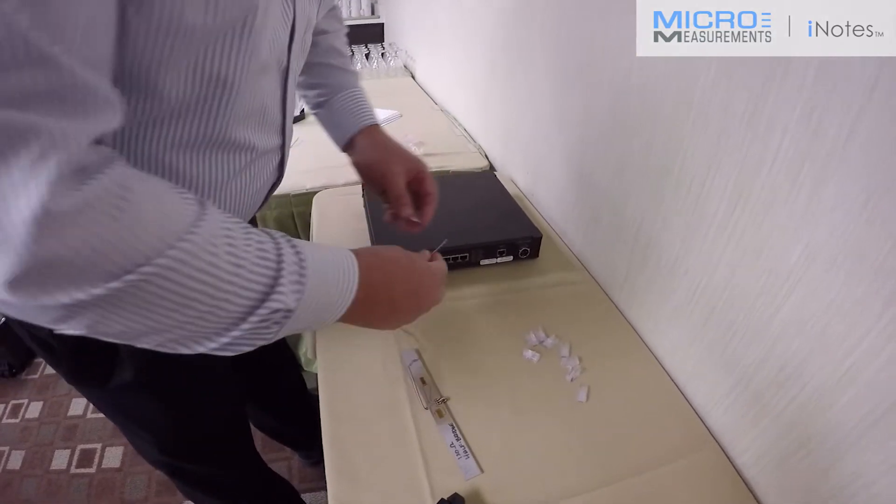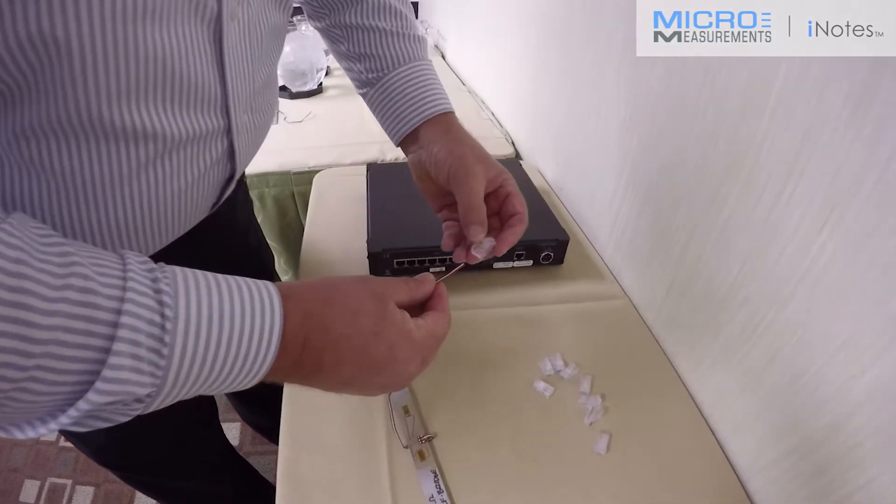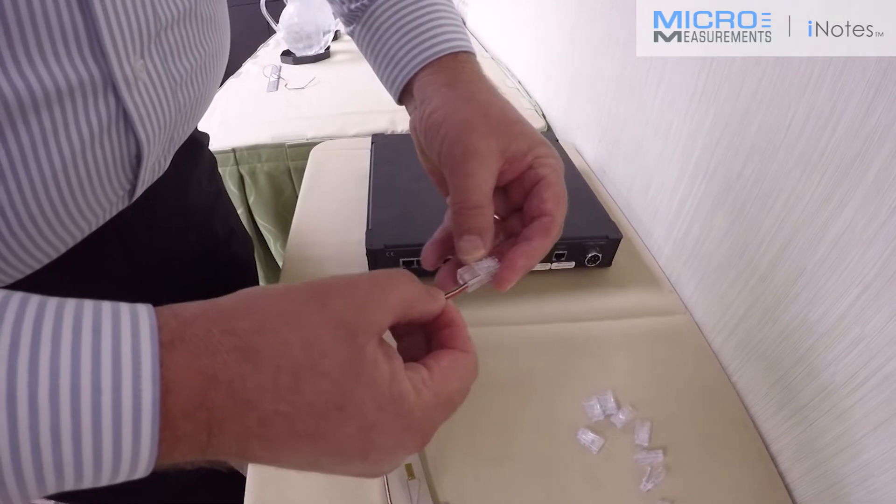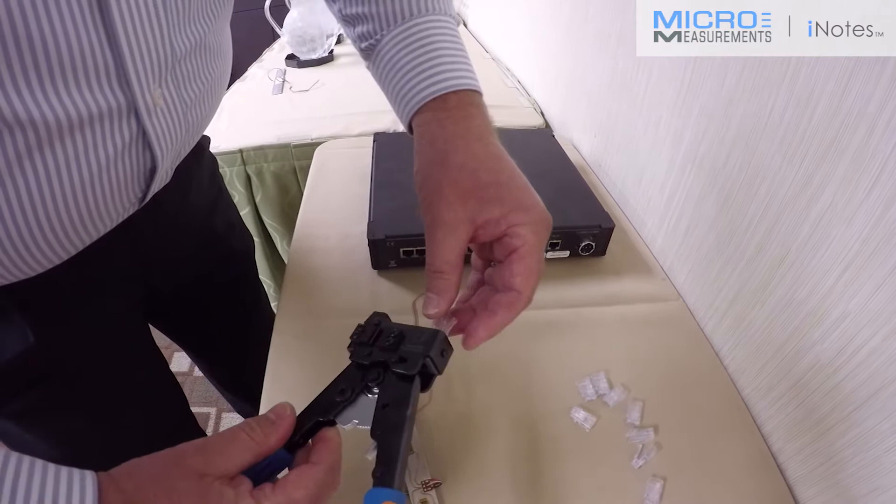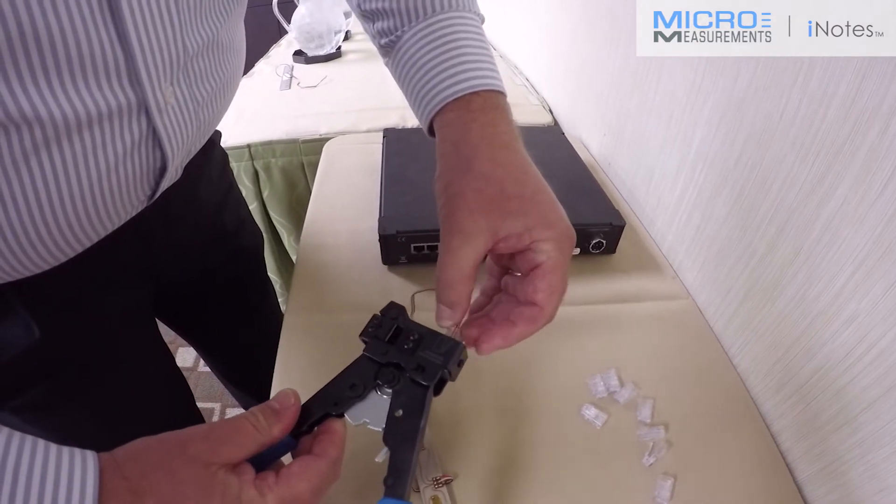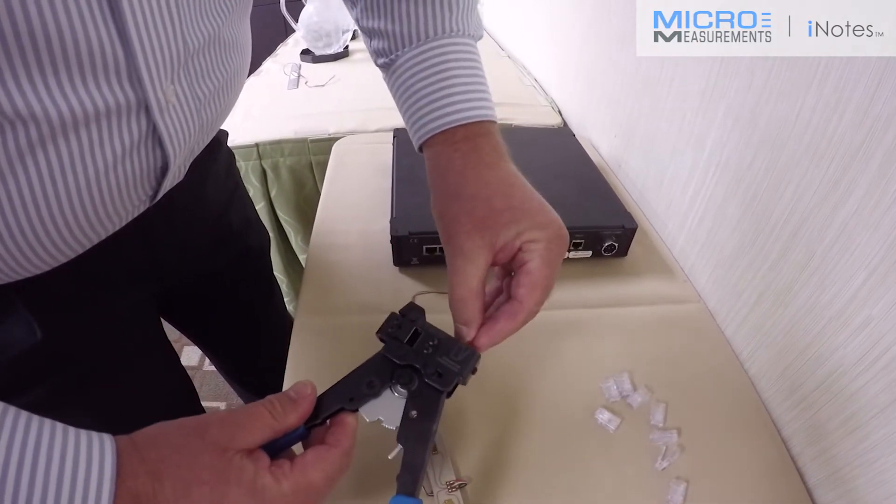So I'll show you how simple it is. You take the RJ45 connector, insert the cable into the connector, insert the cable and connector assembly into the high-end crimping tool,